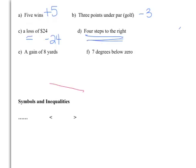Four steps to the right, think of the number line, so that would be four. If I said four steps to the left, it would be negative four. A gain of eight yards: eight. Seven degrees below zero: minus seven.